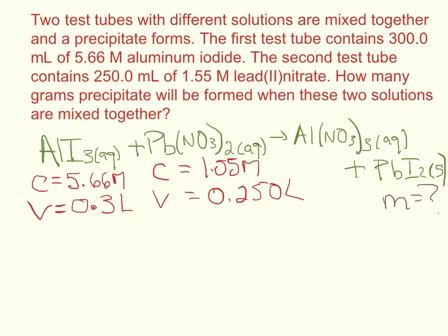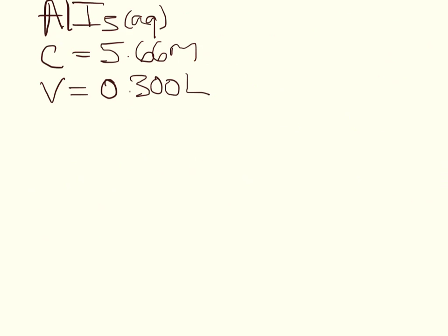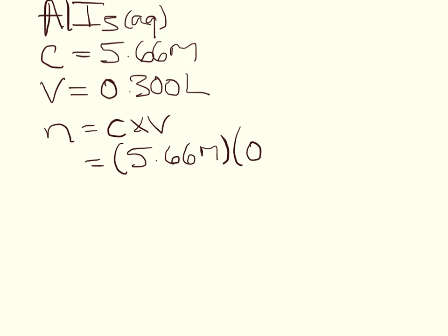Now we have to calculate the number of moles. Just in case you've forgotten, concentration equals moles divided by volume, so rearranging: moles equals concentration times volume. For aluminum iodide: moles = 5.66 mol/L × 0.300 L = 1.698 moles.